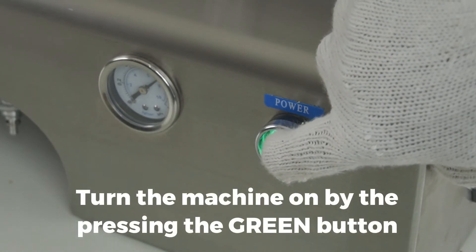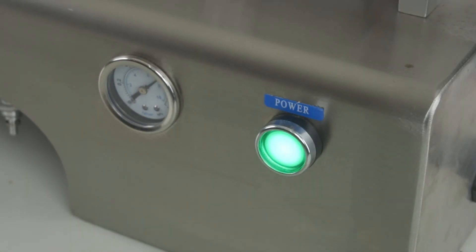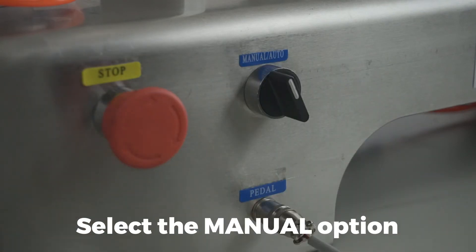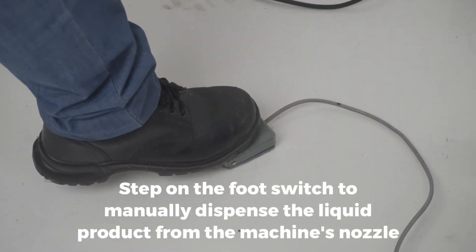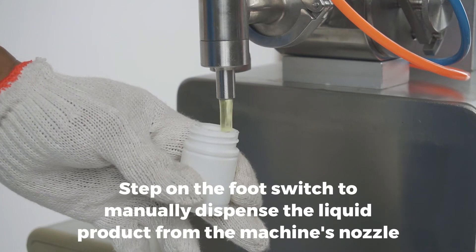Turn the machine on by pressing the green button. Select the manual option. Step on the foot switch to manually dispense the liquid product from the machine's nozzle.